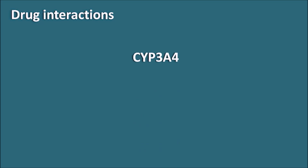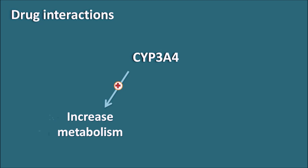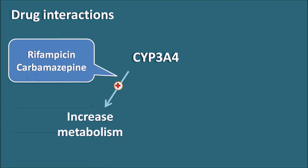Drug interactions: as we have seen, buspirone is metabolized by the CYP3A4 system. So if any drug induces or inhibits this enzyme, it may result in drug interactions. When CYP3A4 is induced, it increases the metabolism of buspirone. Drugs which produce such induction include rifampicin and carbamazepine. When these drugs are given along with buspirone, they may increase the metabolism of buspirone, leading to failure of treatment.